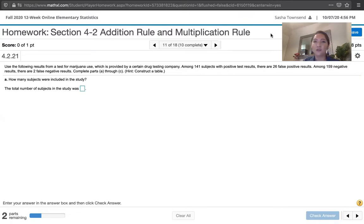Among 141 subjects with positive test results, there are 26 false positives. And then among 159 negative test results, there were two false negative results. Then we're asked to complete parts A through C, and we're given a hint. We're told to construct a table. The first question says, how many subjects were included in the study?